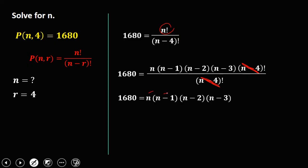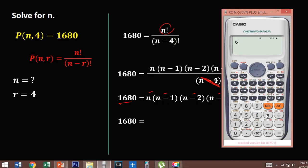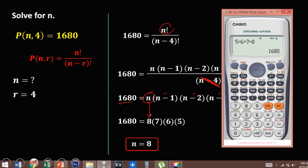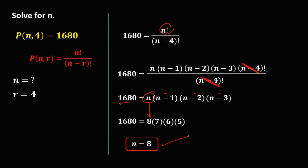So 1680 equals n times n minus 1 times n minus 2 times n minus 3. We need to find these 4 consecutive numbers whose product is 1680. Testing: 6 times 7 times 8 times 9 is 3000, and 5 times 6 times 7 times 8 is 1680. Writing the highest number first: 1680 equals 8 times 7 times 6 times 5. Therefore, n is equal to 8. To check: P(8,4) is 1680. So n is equal to 8.